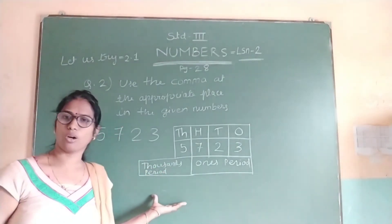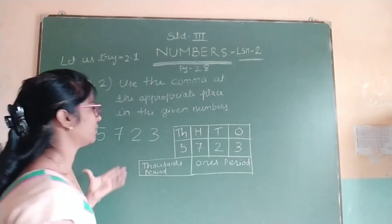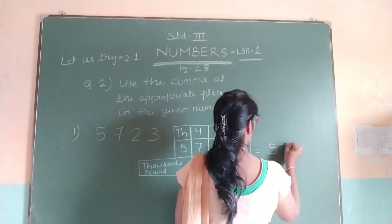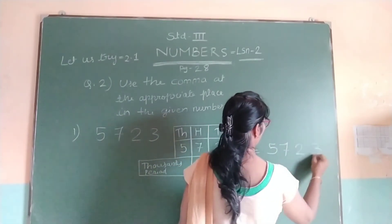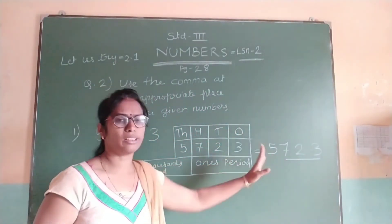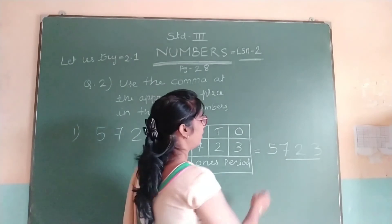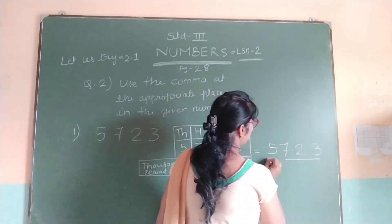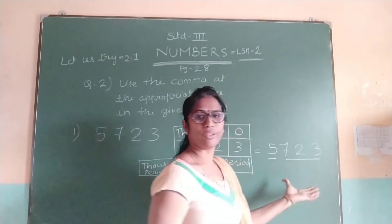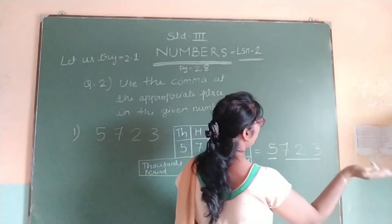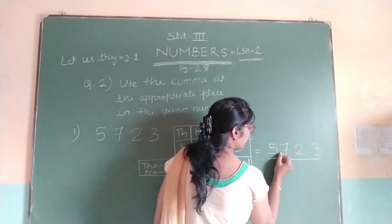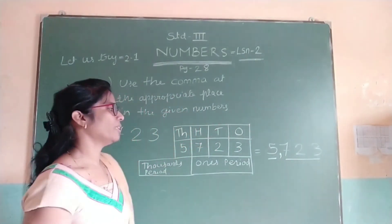So now we place the comma between the 2 periods. First we will write this number. 1s, 10s, and 100s. Now we are supposed to insert the comma between the 2 periods. From your right-hand side count 3 places — that is 1s, 10s, and 100s — then insert the comma.